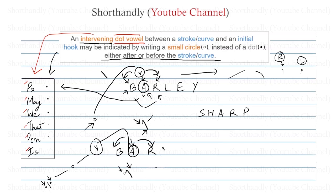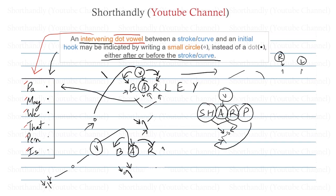Let's take the final word: 'sharp.' We can write 'sharp' like this. We have the 'ish' sound first, then this vowel, then R, then P. To represent 'ish' and R, we combine the initial hook and the 'ish' curve. Then to represent this vowel we make a circle for the 'a' sound, and finally we attach the P stroke. That's our word 'sharp.'